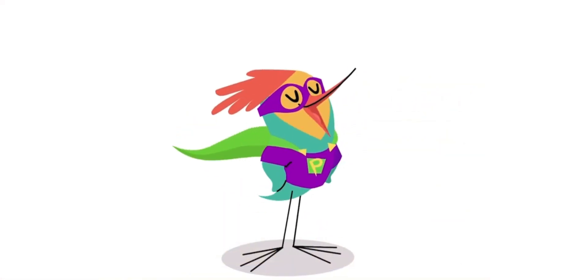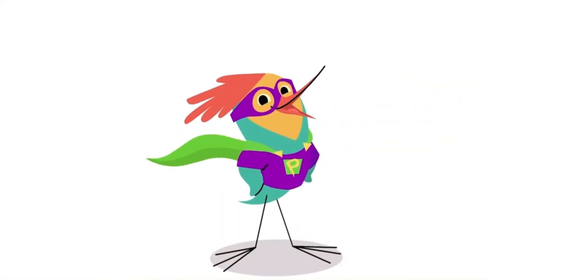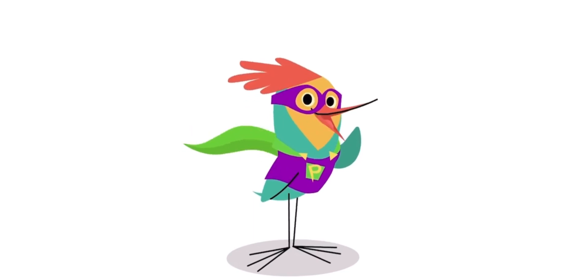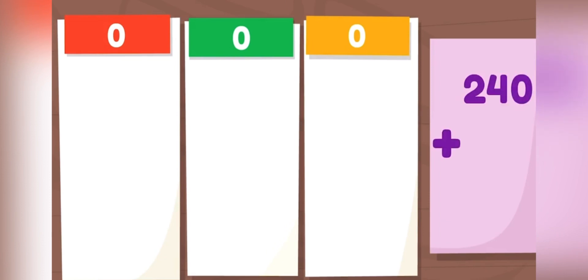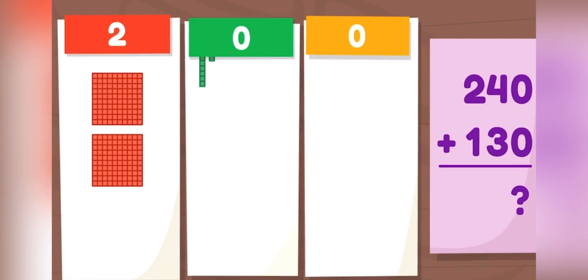I'm Super Pack! Ta-da! And ready to add using big numbers! What is 240 plus 130? We have 240, which is the same as two hundreds and four tens.